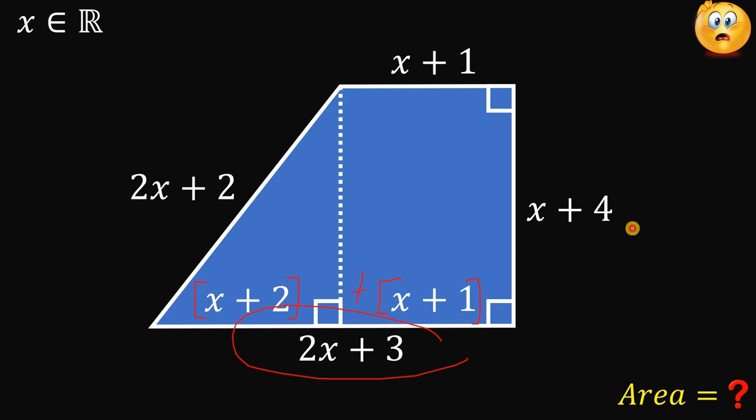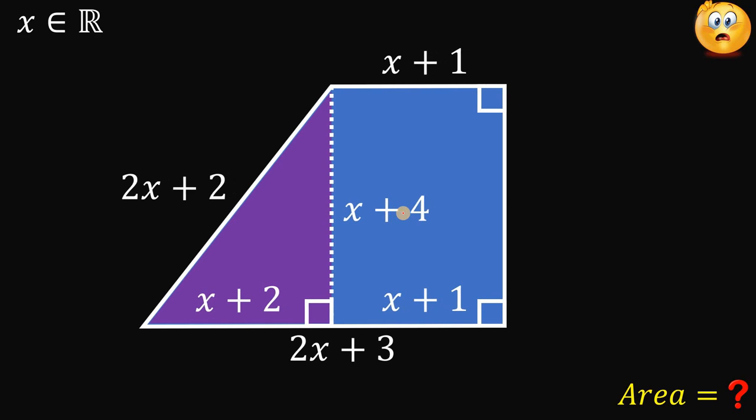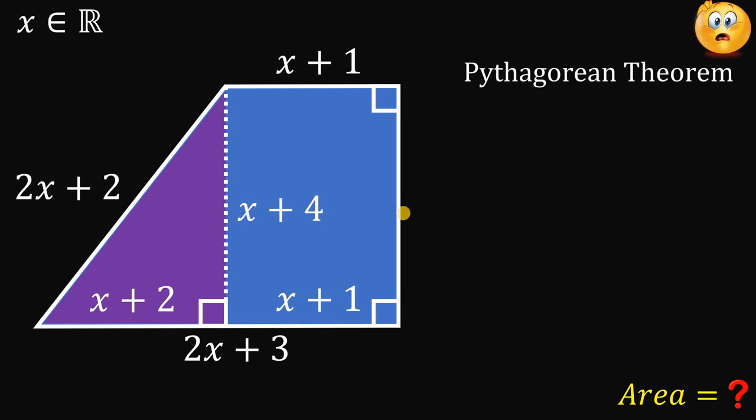Now, since it is x plus 4, the opposite side is also x plus 4 because this is a rectangle. Now, we can see a rectangle right over here. And since it is a right triangle, we can now apply the concept of the Pythagorean theorem.